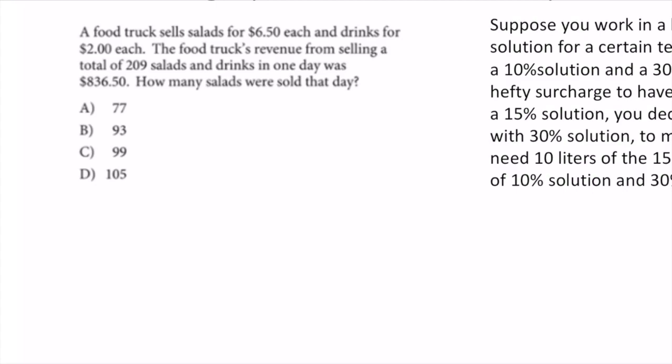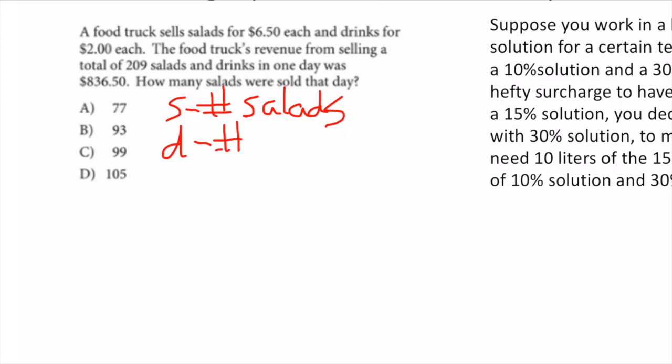First I always declare what my variables are. You can call them whatever you want. In this case, S is the number of salads and D is the number of drinks.